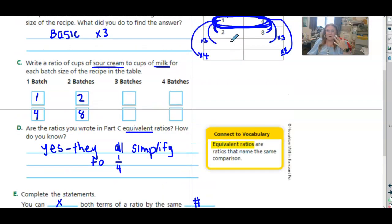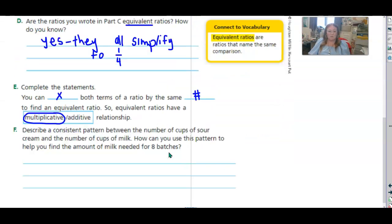So not adding them, right? We times by two, times by three, times by four. We did the same thing to the other side, which makes them equivalent.